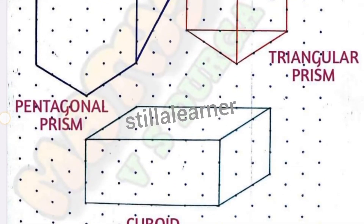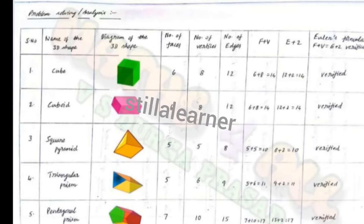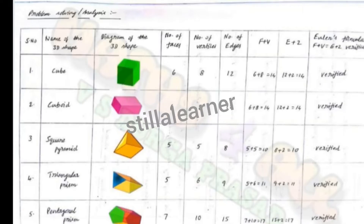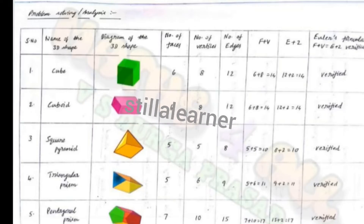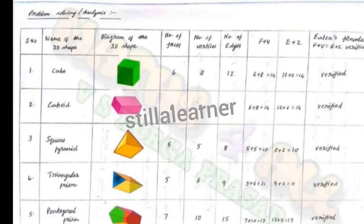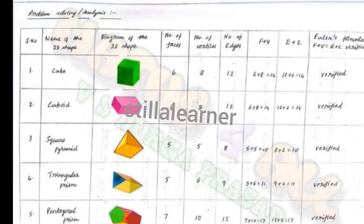Next is problem solving or analysis. Here you have to draw a table of six rows and nine columns. The columns are: serial number, name of the 3D shape, diagram of the 3D shape, number of faces, number of vertices, number of edges, F plus V, E plus 2, and Euler's formula verification — that is F + V = E + 2.